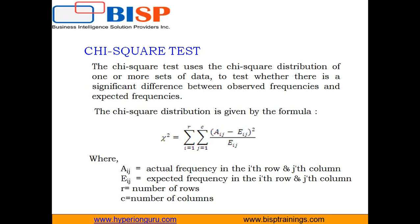The chi-square test is used to determine whether the value of this function is likely to have occurred by chance alone in independent sets of data. The formula for the chi-square distribution uses aij as the actual frequency, eij as the expected frequency, r as the number of rows, and c as the number of columns.